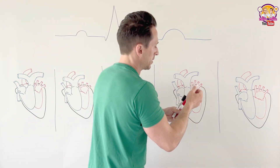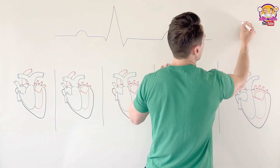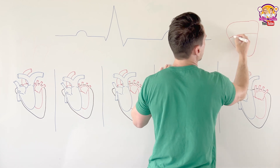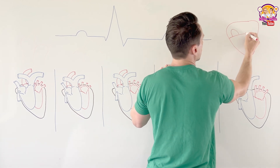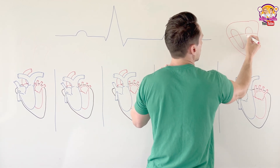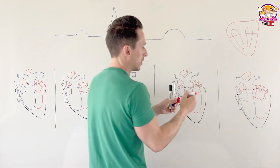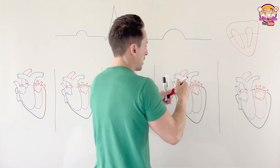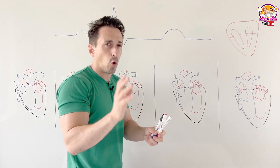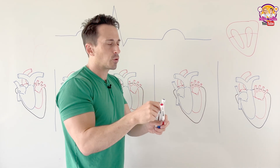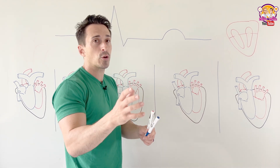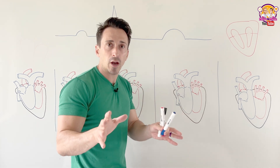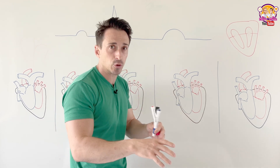An ECG, an electrocardiogram, measures the conduction — the electrical events — in the heart. In order for the heart to contract, an electrical signal needs to propagate through it, and we call this a depolarization event. If you want to know more, watch my video on cardiac action potentials.